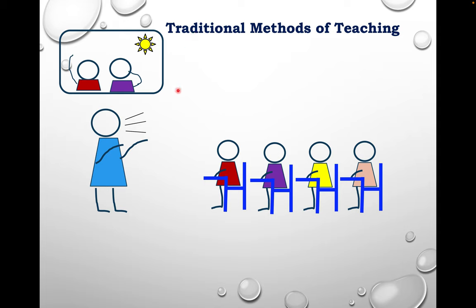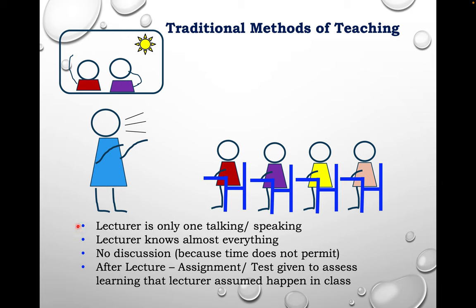When we look at the traditional methods of teaching, a teacher stands in front of the class and speaks, and we assume the students are listening attentively and learning. But we also know that some students have not attended class — they're out there in the marketplace for various reasons. With the traditional methods of teaching, the lecturer is the only one speaking, knows almost everything. There's no discussion, perhaps because time doesn't permit or because class numbers are large. After the lecture, we give an assignment or a test to assess the learning we assumed happened during class.